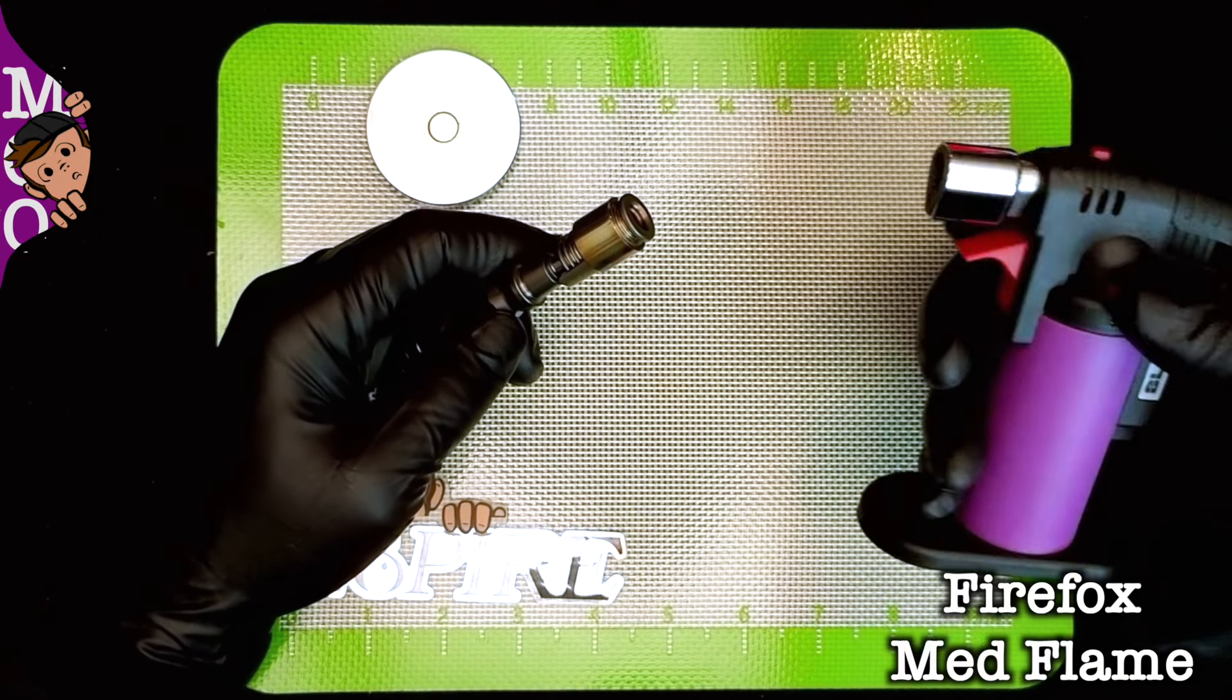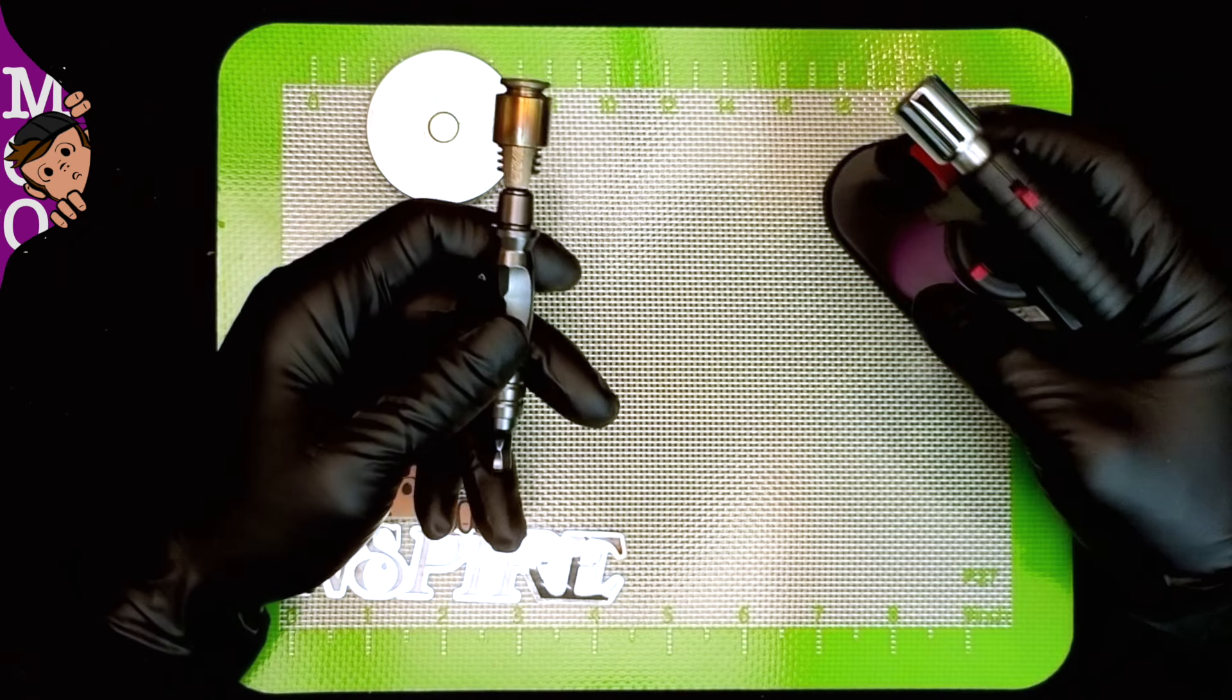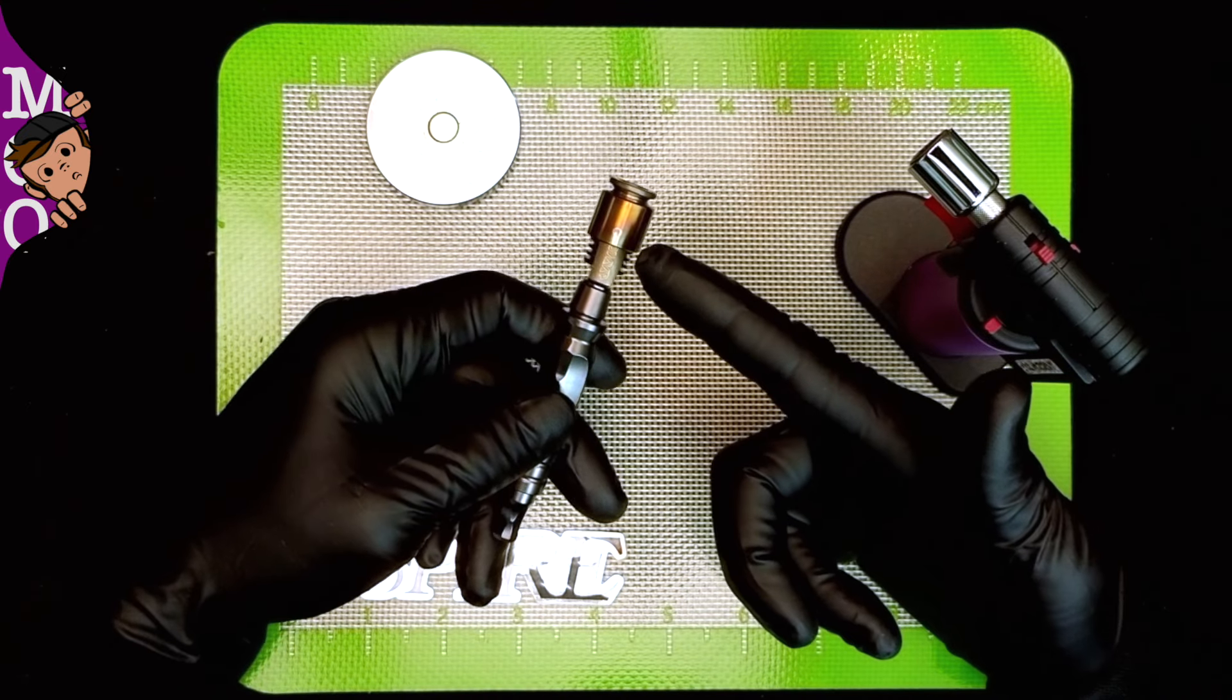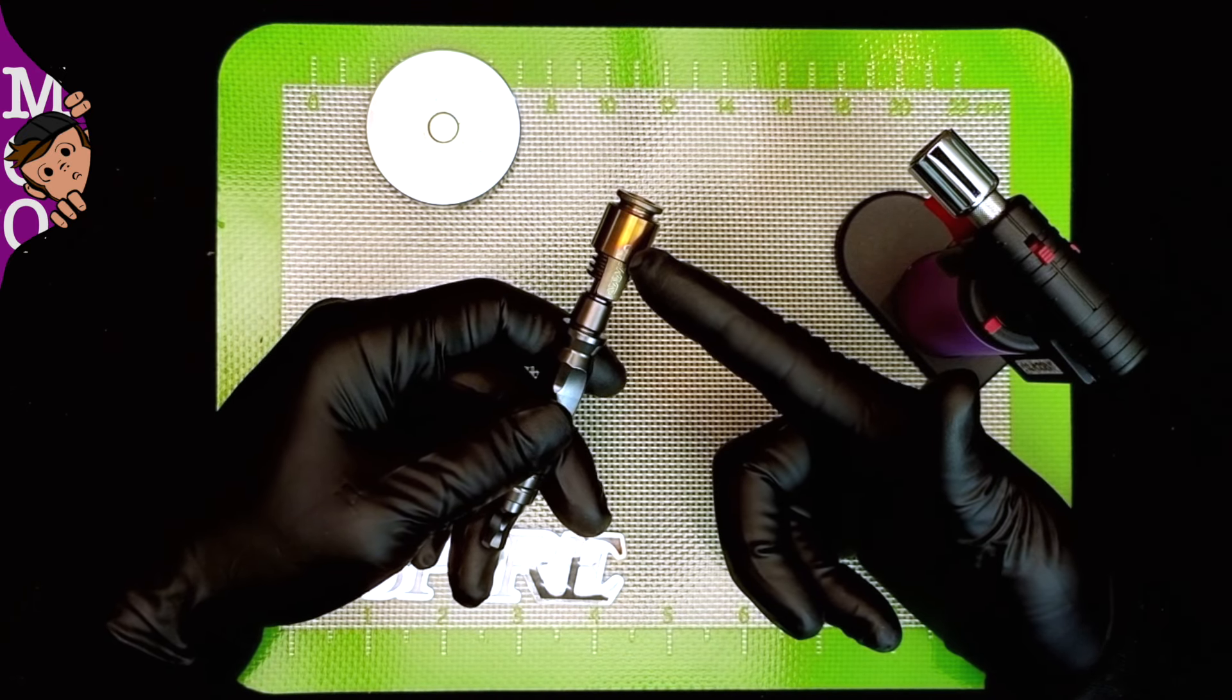We're gonna get my trusty Firefox out at a medium flame setting and the goal is gonna be just like on the old school version to point it at the S and let it rip.